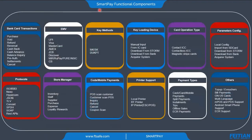Now let's talk about SmartPay functional components. We have multiple modules like bank card transaction, which has multiple types of transactions like purchase, void, refund, reversal, cash back, cash advance, balance inquiry, pre-auth support, settlement, and cancel.